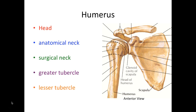Moving on to the humerus — I'm showing you a proximal view first, with a distal view in a moment. You see this spherical portion, which is the head of the humerus, forming the shoulder joint along with the glenoid cavity of the scapula. Below the head are two dotted lines marking a natural constricted portion called the anatomical neck, whereas the more distal constricted portion is called the surgical neck — because this is the most common site where breaks occur in the humerus.